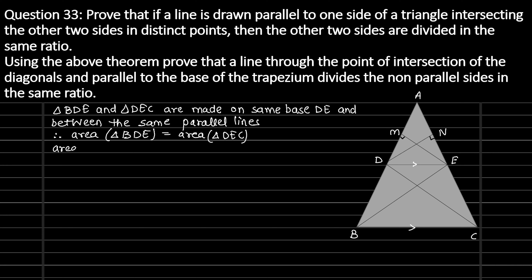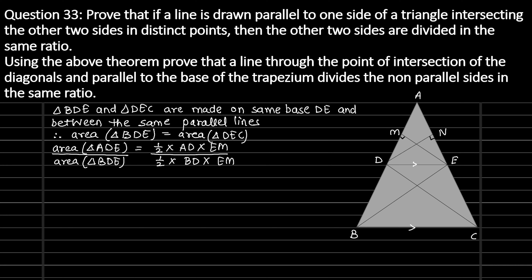Now, area of triangle ADE divided by area of triangle BDE equals half times AD times EM divided by half times BD times EM. The halves cancel and EM cancels, so on simplifying we get AD divided by BD. We will write this ratio down as our first result, derived using equations 1 and 3.